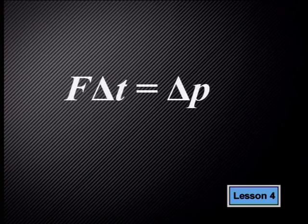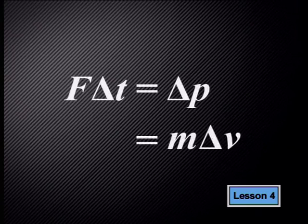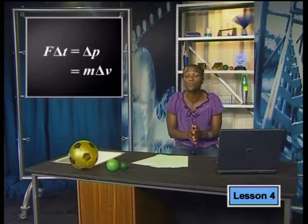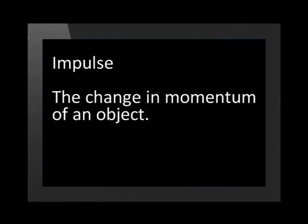Impulse is given by the equation: force applied times change in time equals the change in momentum, which is also equal to mass times change in velocity. This equation gives us a definition for impulse. Impulse is defined as the change in momentum of an object.